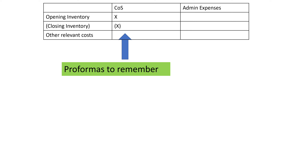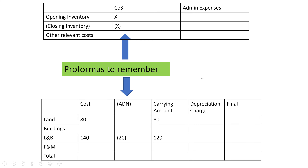Here are some pro formas that I think are helpful — I only remembered them when preparing this presentation while working through an exam question. You can premeditate what's going in. For cost of sales: opening inventory plus purchases less closing inventory — those are the minimum entries, and there may be other relevant costs like manufacturing. For admin expenses, you basically add in all relevant expenses; anything to do with accruals or write-offs of trade receivables goes into admin expenses as the default account.